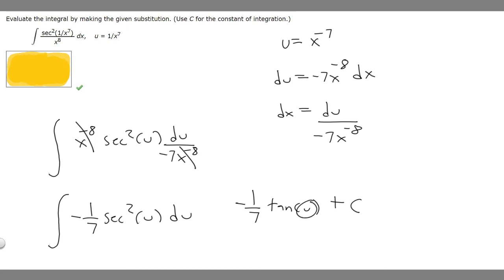And then now all we've got to do is replace u with what we found it to be, or they told us. So just x to the minus 7. So minus 1 over 7 times the tangent of u, but we're replacing it with what it is: x to the minus 7, and then plus C. So this right here is going to be your final answer.